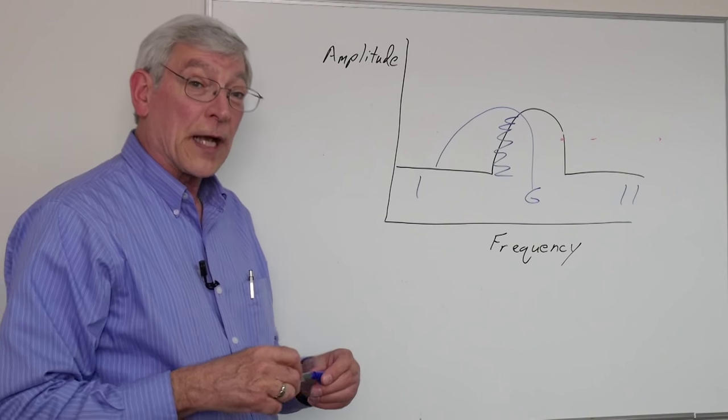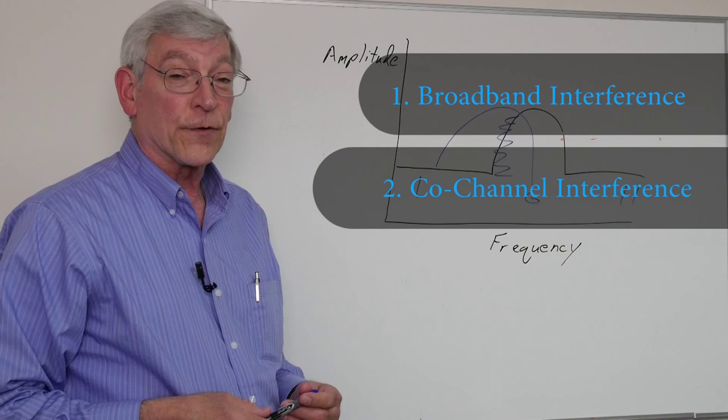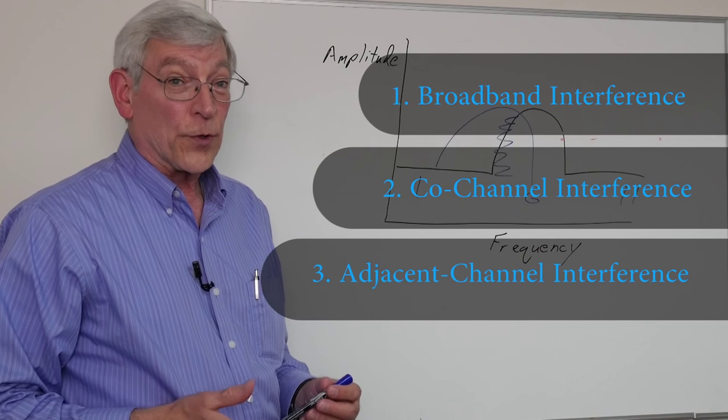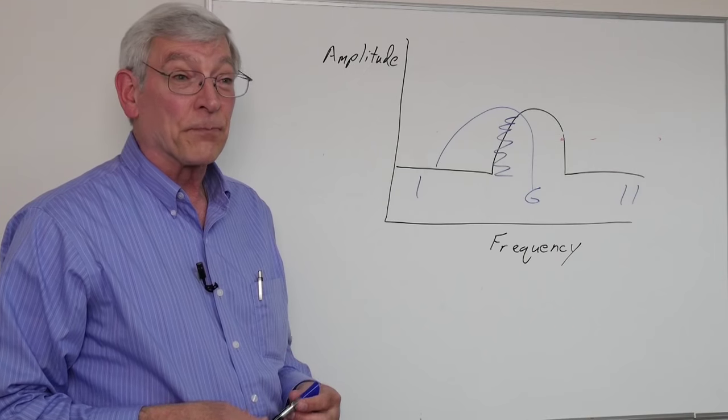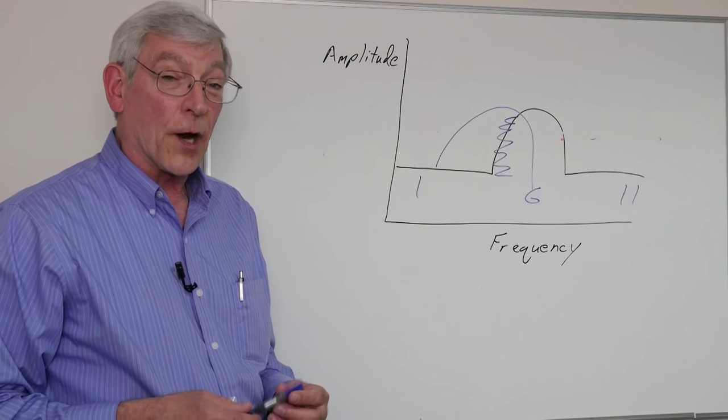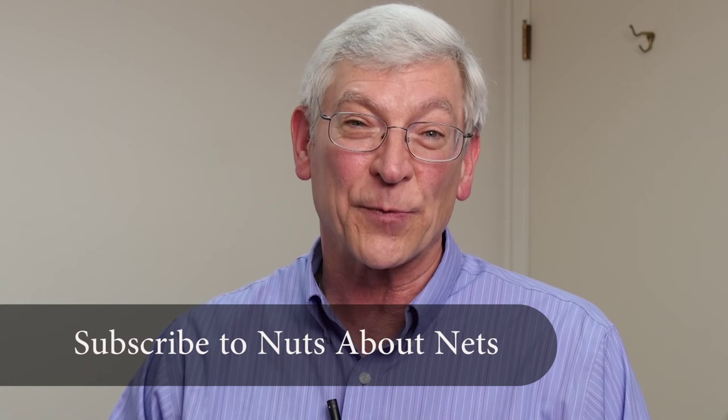So to summarize, we've got three kinds of interference: broadband interference, co-channel interference, and adjacent channel interference. Different devices will produce those different kinds of interference, and to find those and solve problems with them, we need an RF spectrum analyzer. Thanks so much for watching the video. We've got some other videos with helpful information about specific wireless performance issues. I hope you'll check them out.